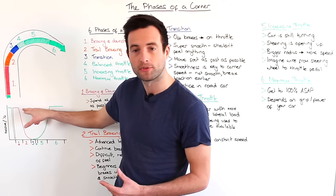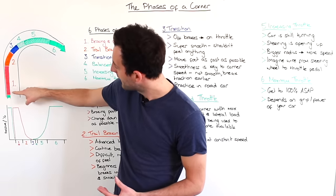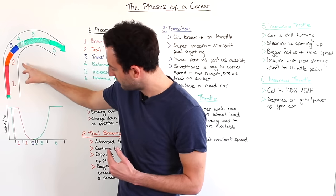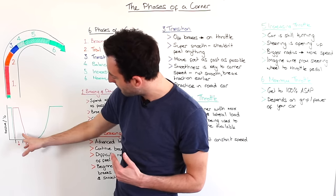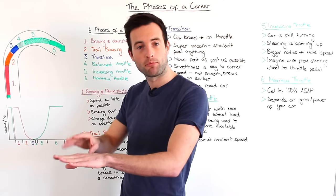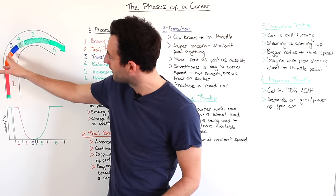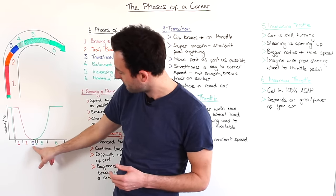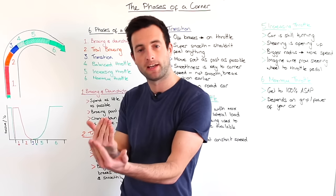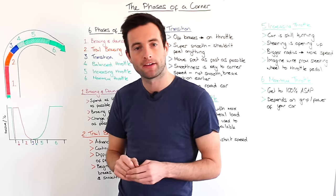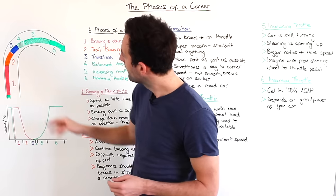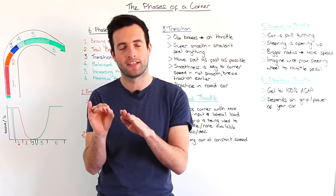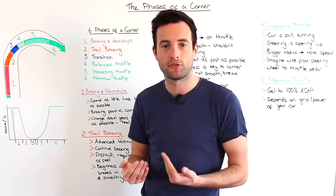Phase one corresponds to this part on the diagram where we get on the brakes to 100% of the brake pressure and we're stopping the car in a straight line. Then we head to phase two, which is this section where we're beginning to release that brake pressure and coming off the brakes completely as we turn the car into the corner. Phase three, the blue section, is again the transition where we're coming completely off the brakes and beginning to get back onto the accelerator. Then we head to phase four, the small section where we're just getting back on the accelerator to keep the speed in the car.